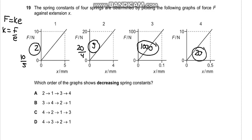So it says which order of the graph shows decreasing spring constant, so largest to smallest. So the largest one is 1000 which is 3. Then it's 20 which is 4. Then it's the second one which is 2 and then it's 1. So the appropriate answer is B.